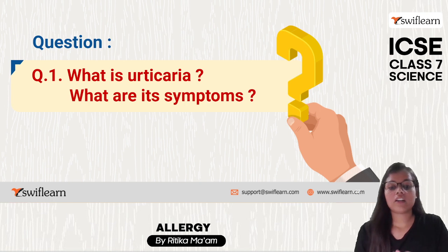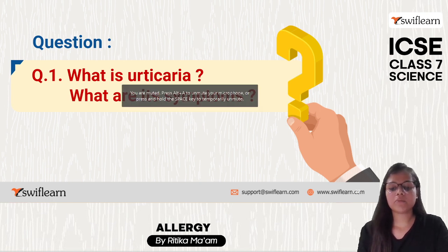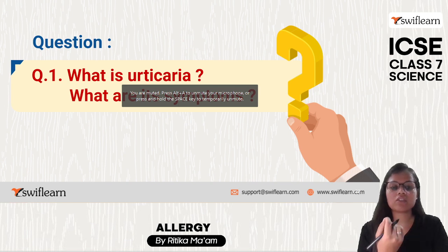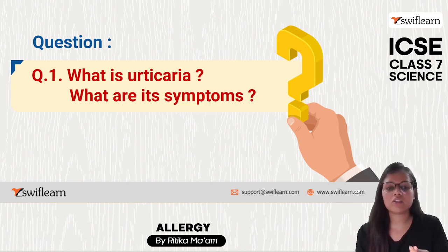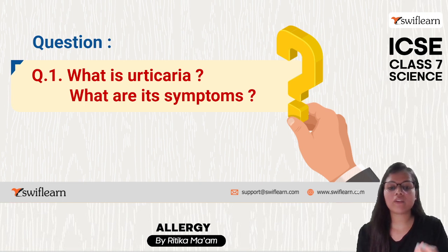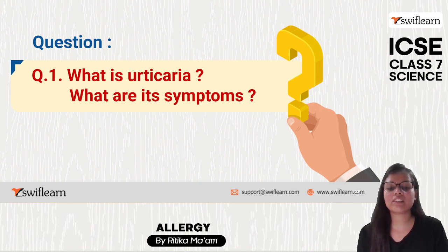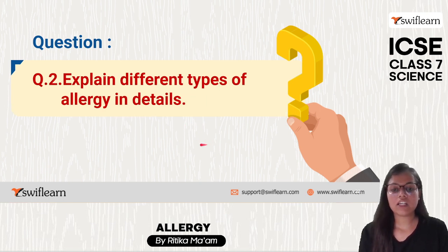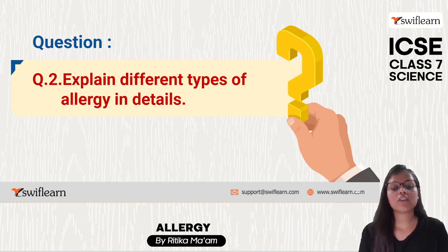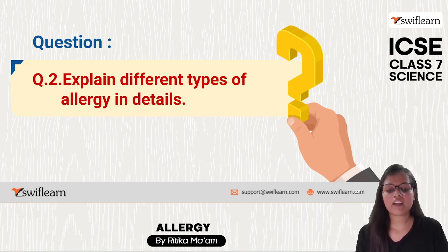What is urticaria and what are its symptoms? It is a kind of itchy rash which occurs on our skin due to some chemicals, causing swelling and itchiness. No particular treatment is needed because it gets better in a few days.